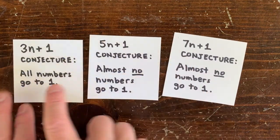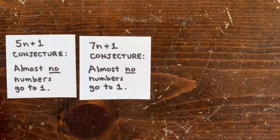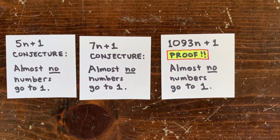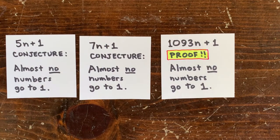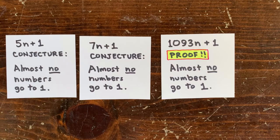Same thing for the 9n plus 1 problem, the 11n plus 1 problem, and so on. Until we reach the 1093n plus 1 problem, where we can finally prove for sure that almost no numbers go to 1.